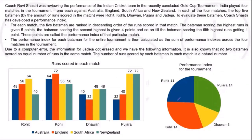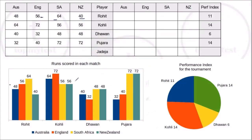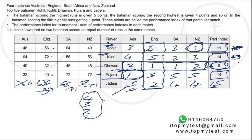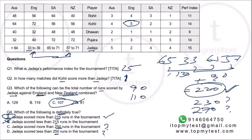This set looks intimidating due to the large amount of data — bar graphs, pie charts — but once you transfer the data to a table and identify the key insight (performance indexes can only go up, never down), it becomes manageable. In an exam situation this would take about 12-13 minutes. It's moderate to slightly difficult — not conceptually hard, but challenging due to data size.